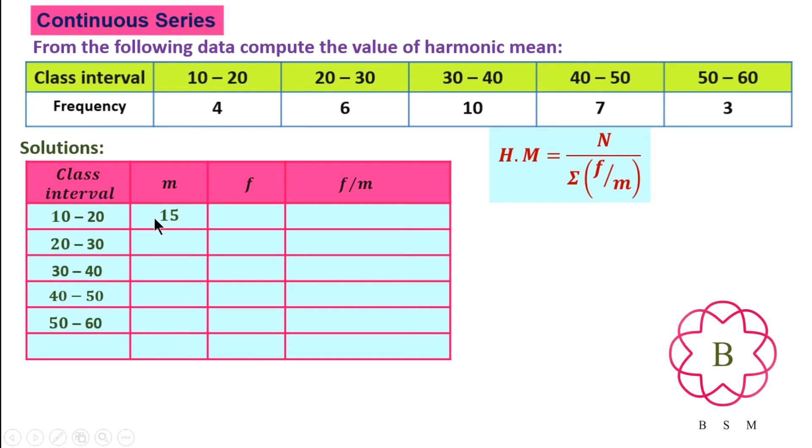So add and divide: 50 divided by 2 is 25, then 70 divided by 2 is 35, 90 divided by 2 is 45, then 110 divided by 2 is 55. Then frequency is given as 4, 6, 10, 7, then 3. So F divided by M.